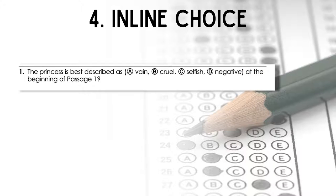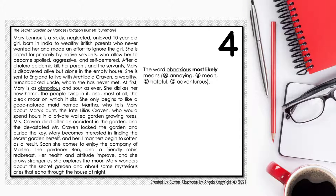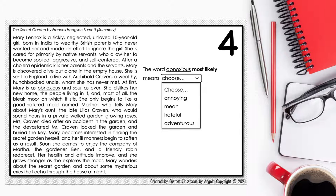The fourth item type is inline choice, where students have to select a word or phrase to complete the sentence. In the past, students would see a multiple choice question with four choices. Now students will select the correct answer within the sentence itself. The real test will be digital, and students will have to click on a dropdown box where they will be able to select their answer choice.